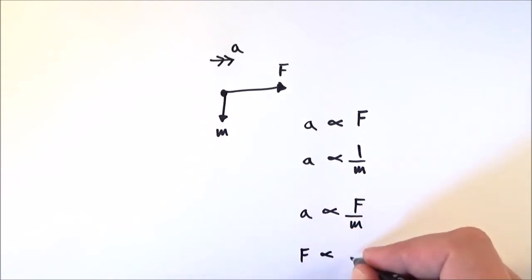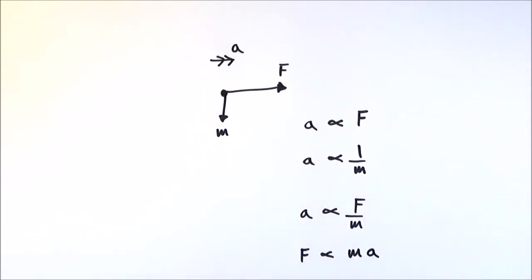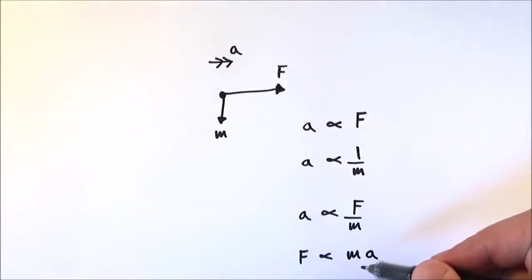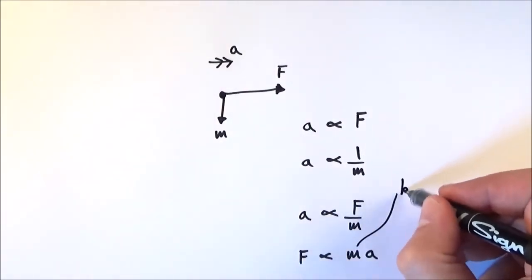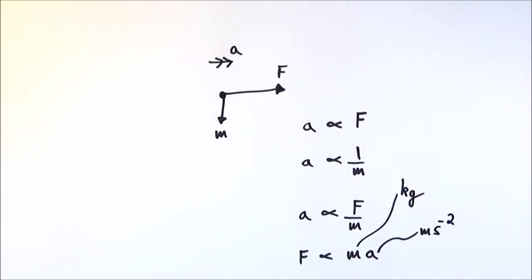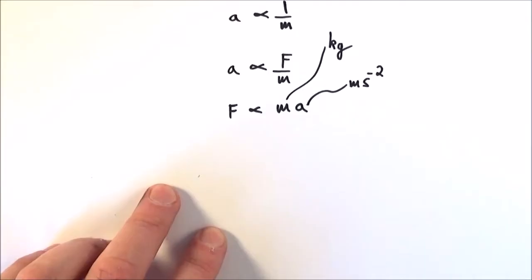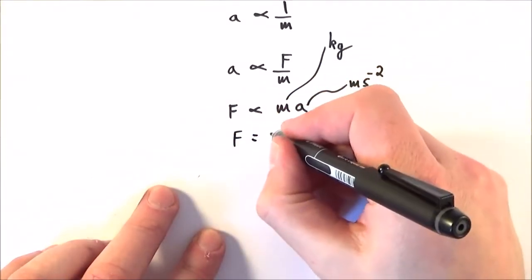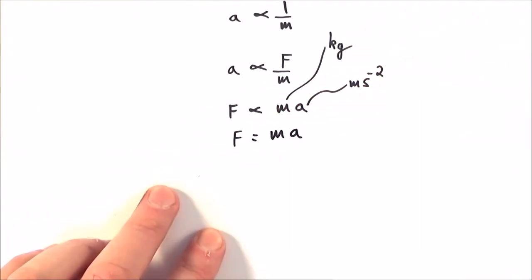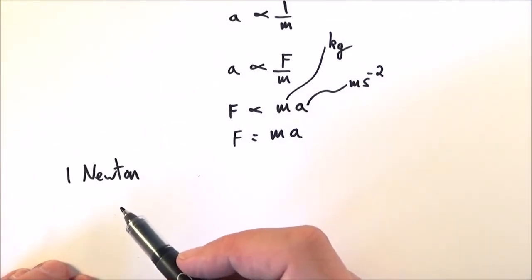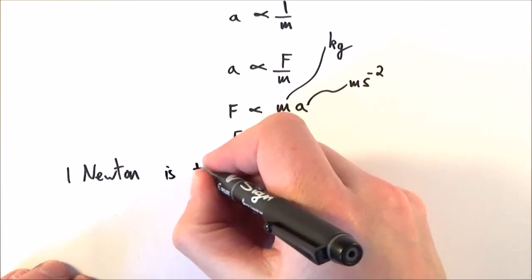We could also write this as force is proportional to mass times acceleration. If we choose our units carefully — measuring mass in kilograms and acceleration in meters per second squared — and use an appropriate unit for force, then we can replace the proportional sign with an equals sign. The force measured in newtons is equal to the mass in kilograms times the acceleration in meters per second squared. This gives rise to the definition of the newton.